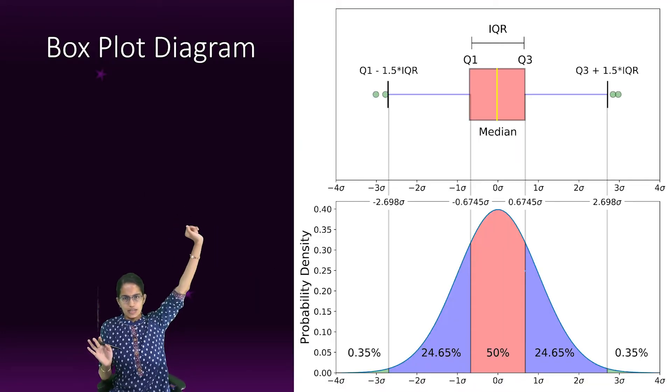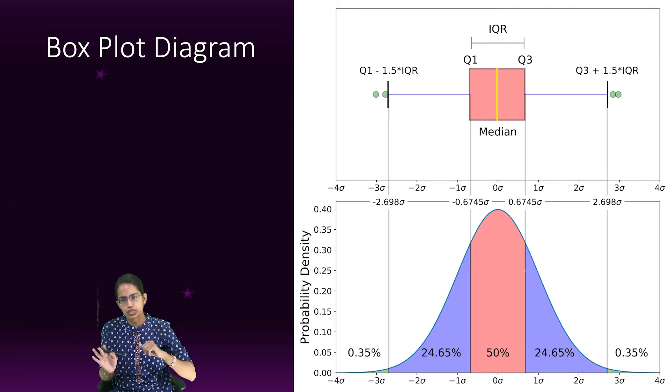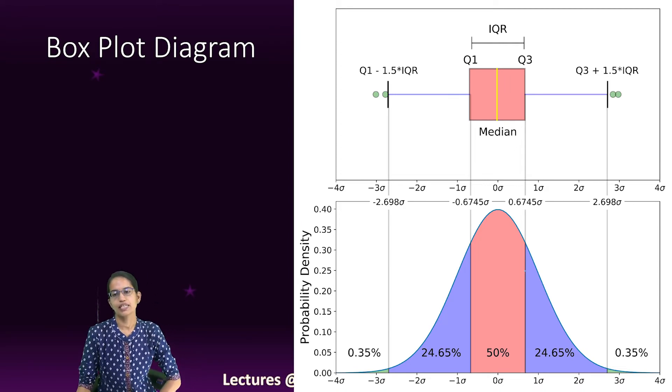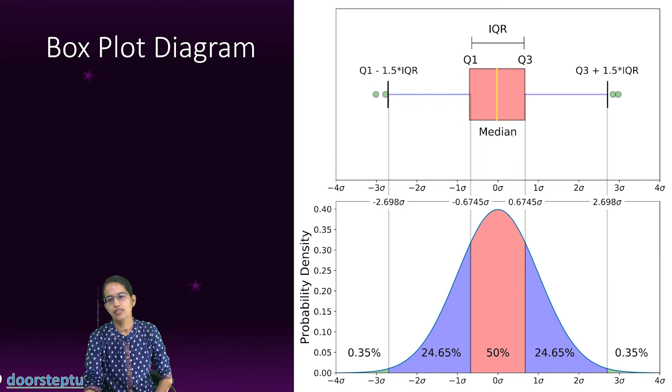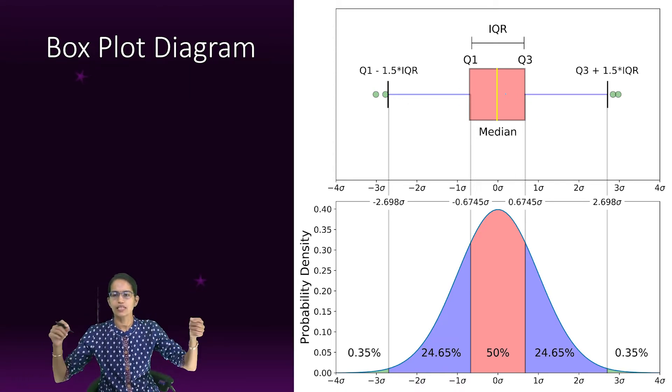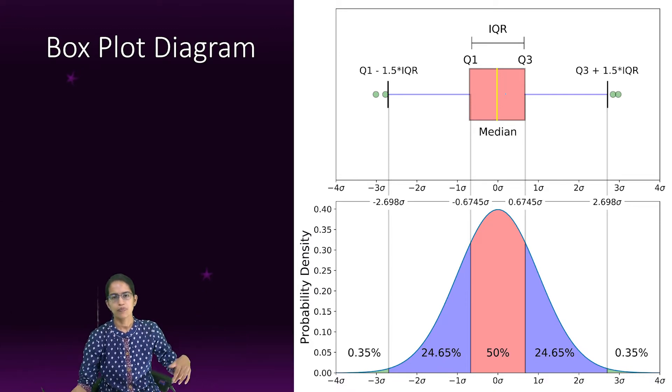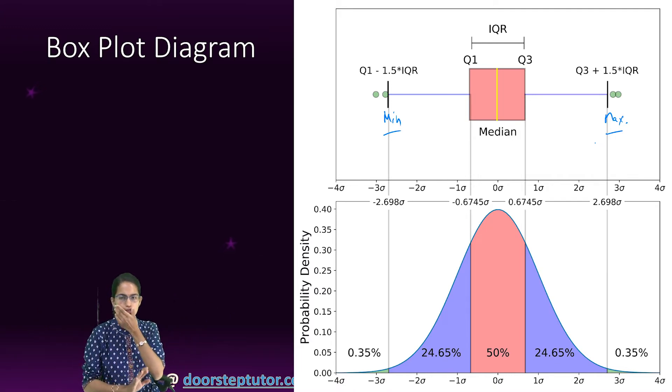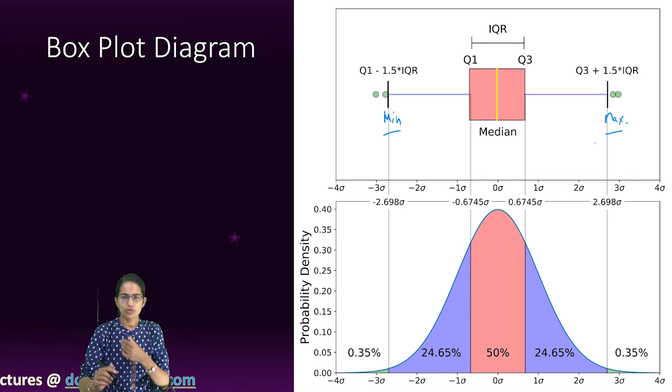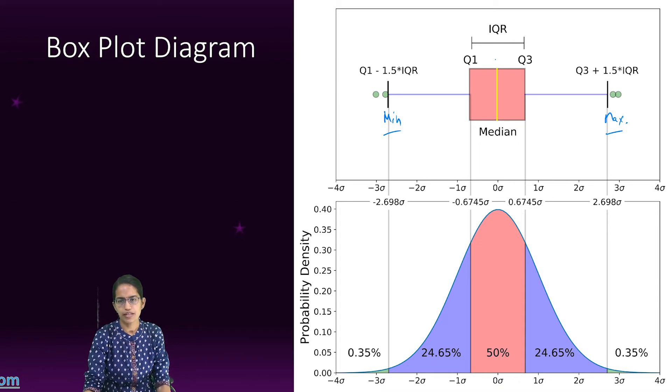Now once I have the five-number summary, I can represent these values here. When I am representing these values, Q1 to Q3 are represented as a form of box. So this pink box represents Q1 to Q3. Then with the whiskers, I represent the maximum and the minimum. Here I have the minimum value and the maximum value.